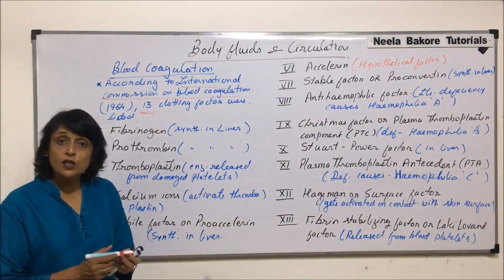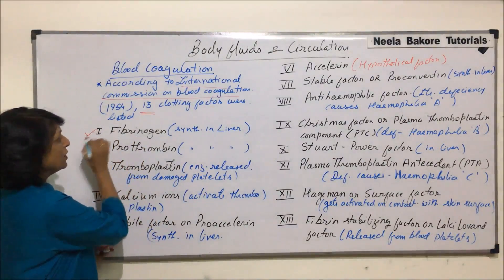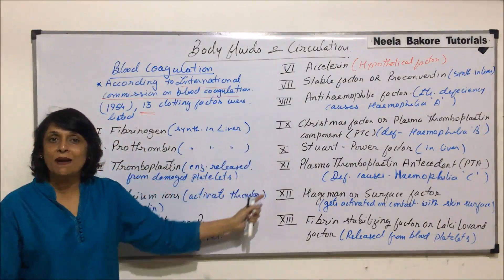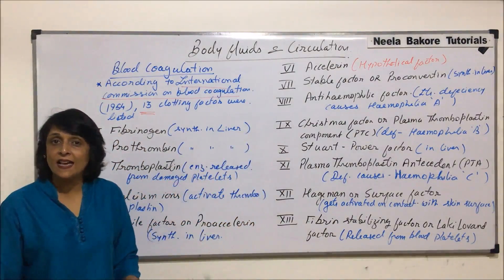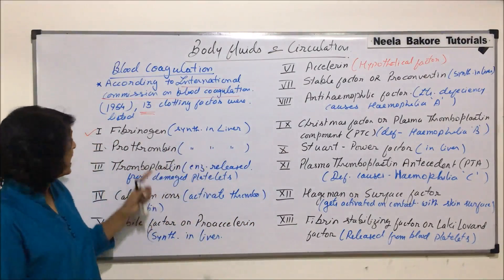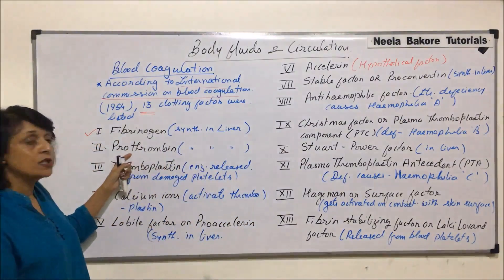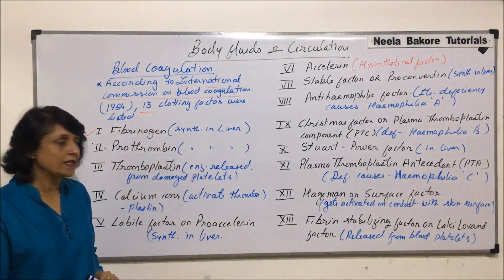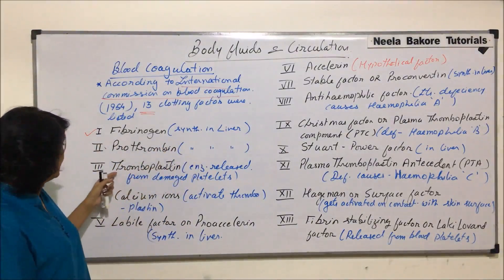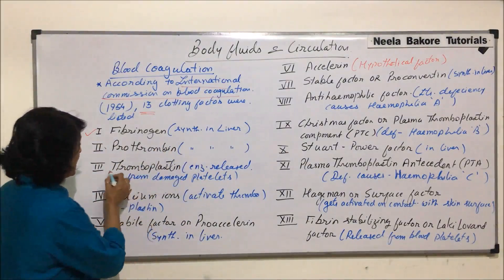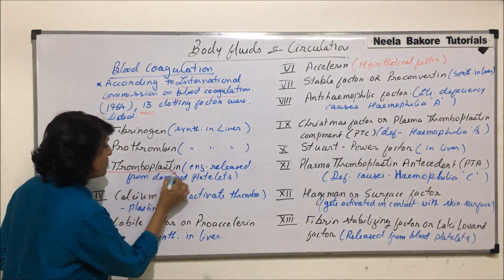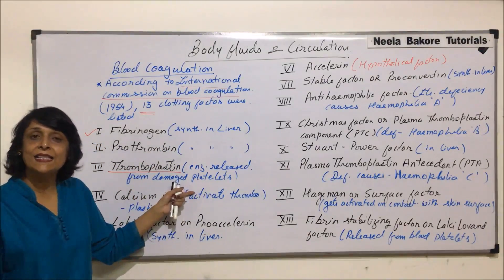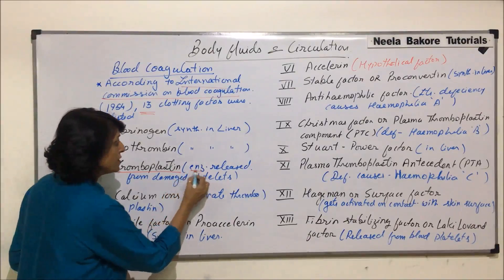The first factor is fibrinogen, and as you would see, most of these factors are synthesized in the liver. The second factor is prothrombin, which is also synthesized in the liver.